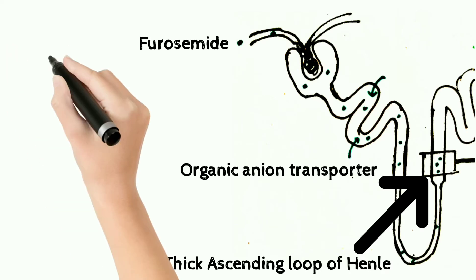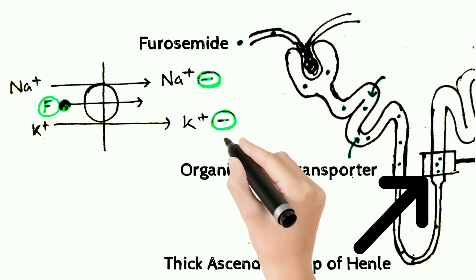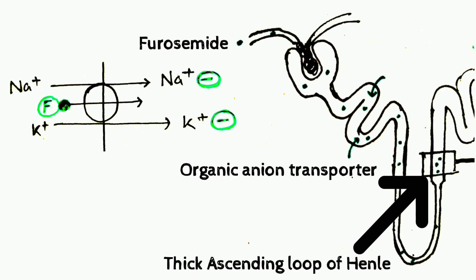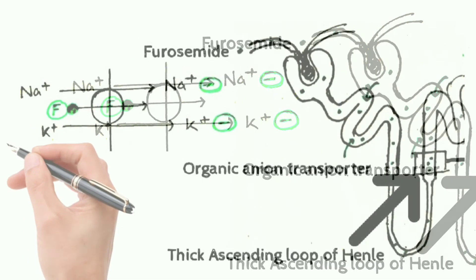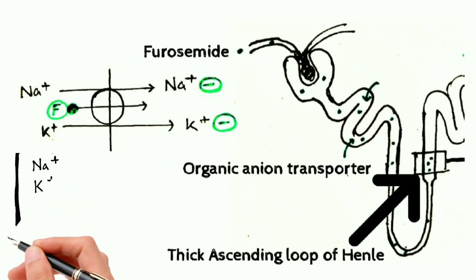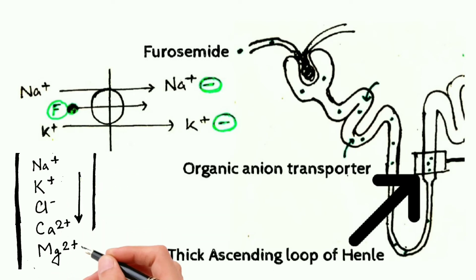Furosemide acts by binding at the chloride binding site of the transporter, blocking its action. As a result, there is no absorption of sodium, chloride, and potassium, so these ions are increased in the urine — they are all actively excreted.